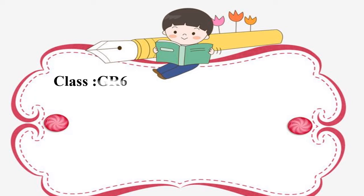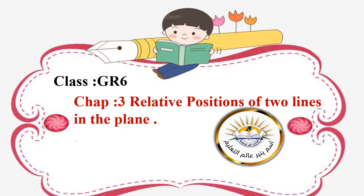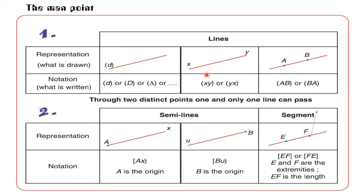Good morning, grade 6. How are you? Today we are going to start with your Book of Grade 6. I will start with Chapter 3, Relative Positions of Two Lines in the Plane. It is from page 24 till page 36. Please, I need you to stay with me. In this video we are going to discuss the difference between lines, semi-lines, and segment.